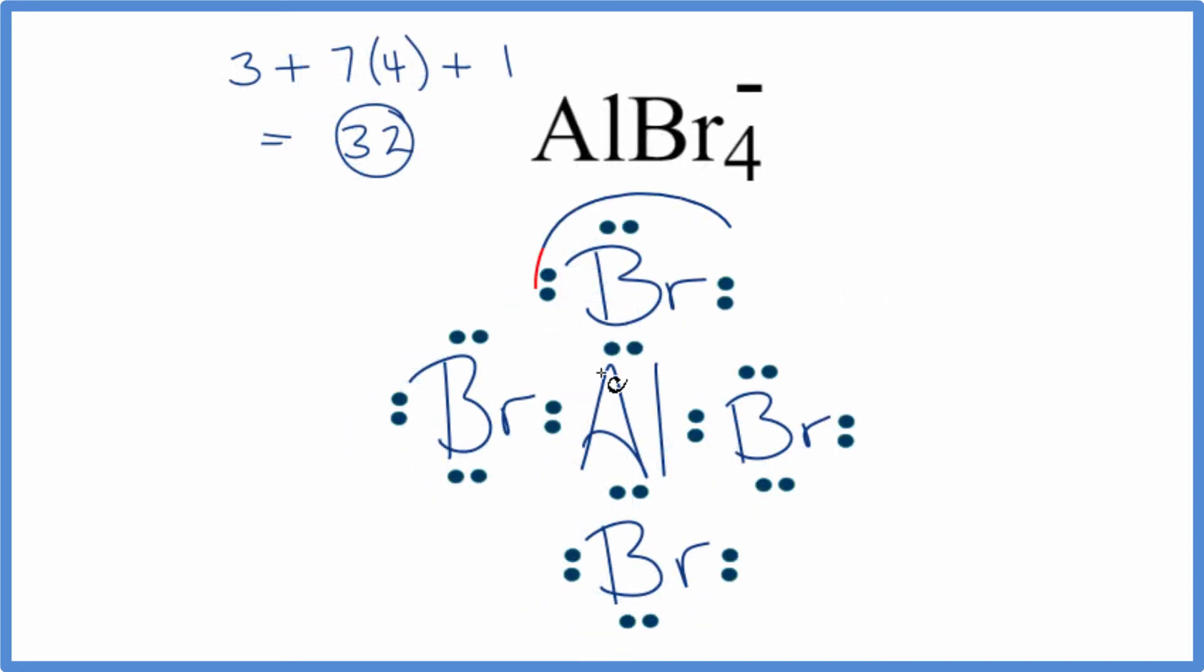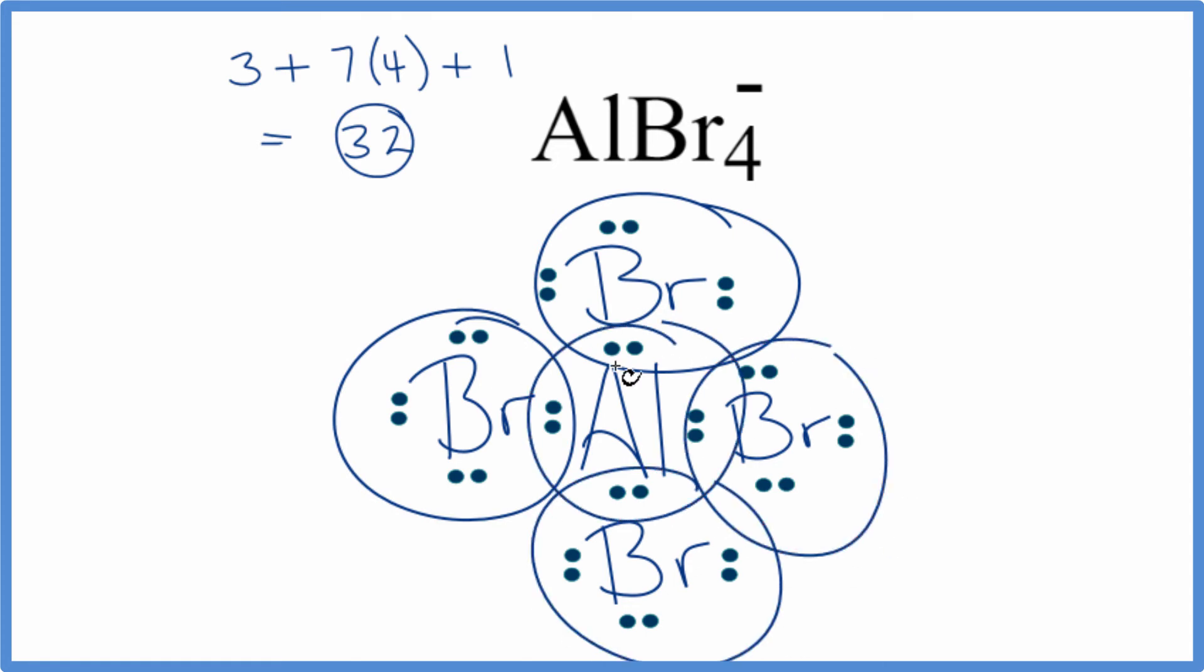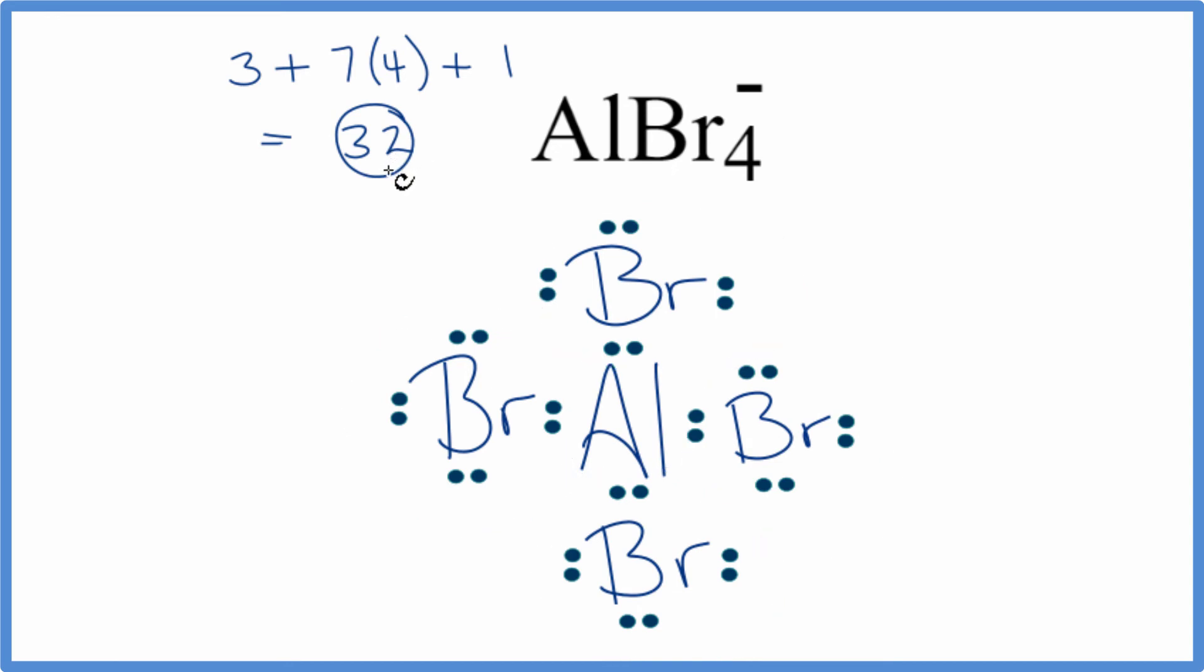So at this point, we've completed the octets for each of the bromine atoms, and that central aluminum has an octet as well. We've also used all 32 valence electrons. So this is the Lewis structure for AlBr4-.